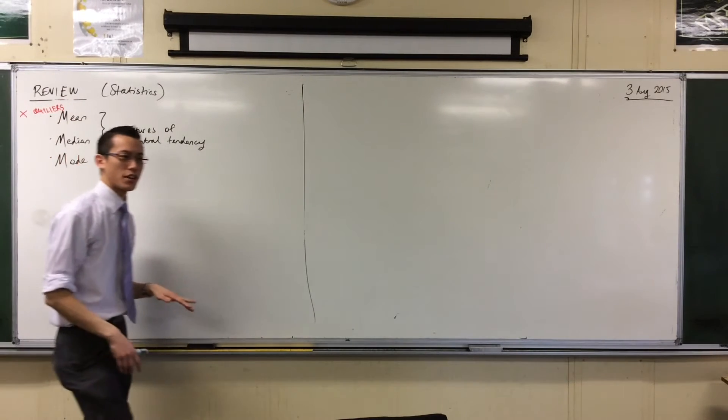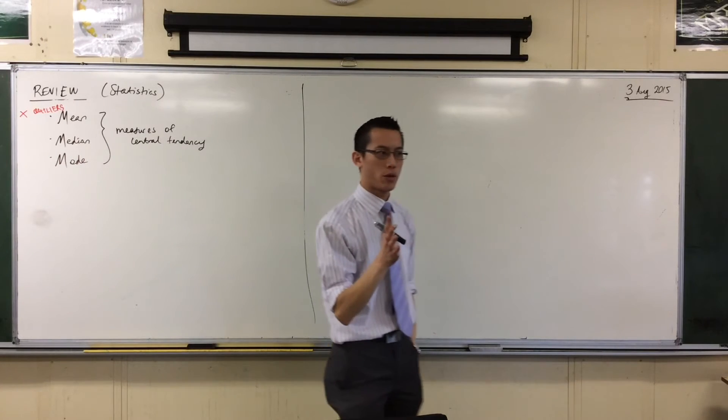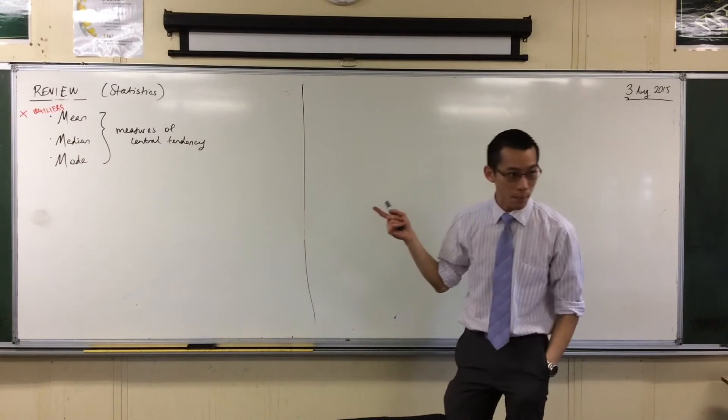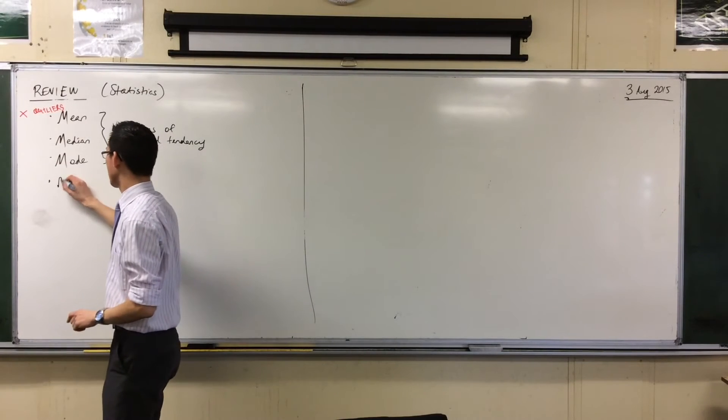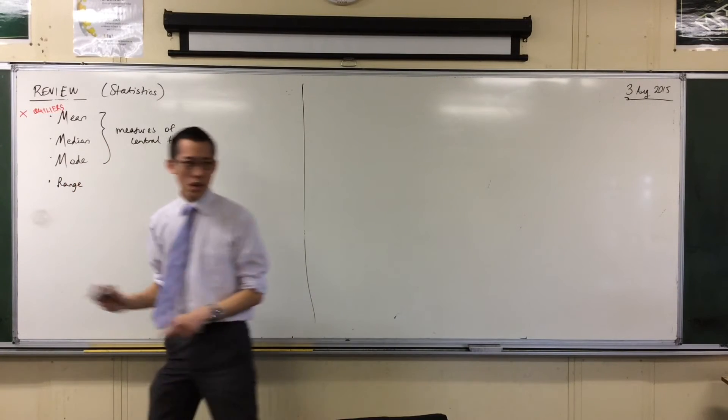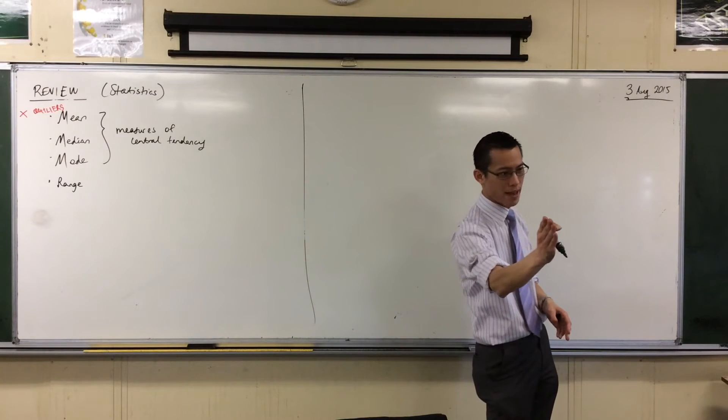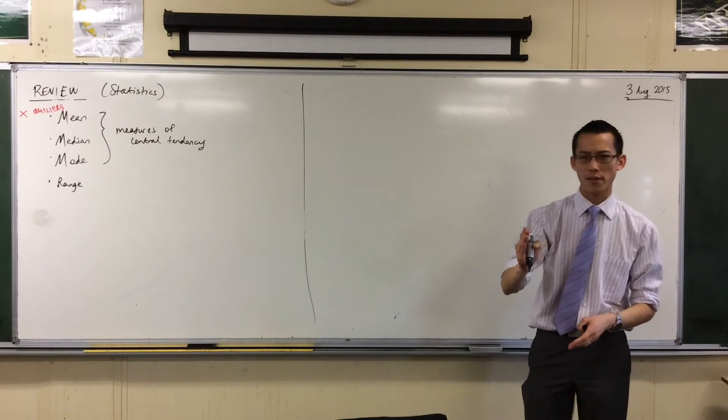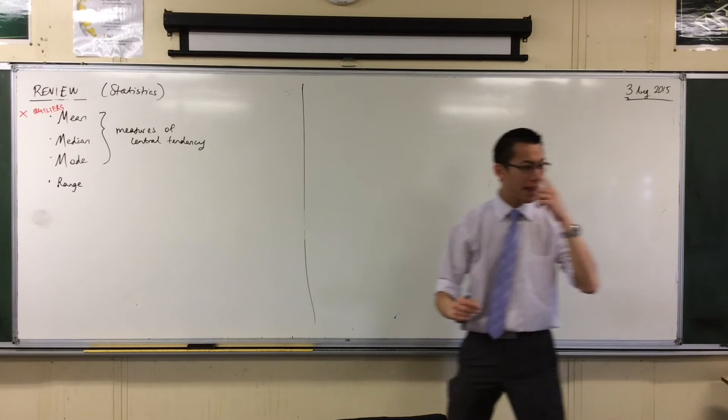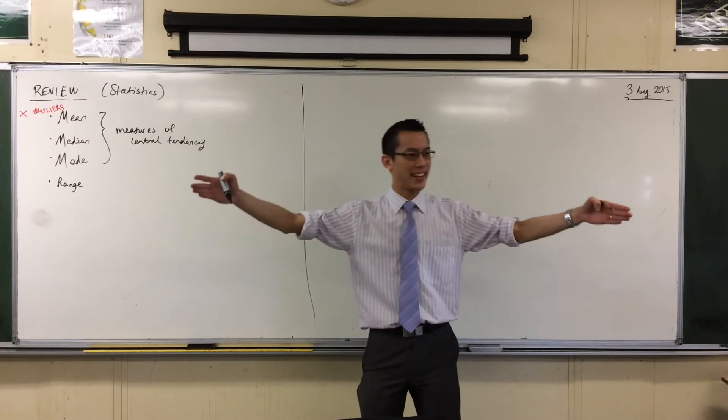So they each have their measure. Now there was one other number that we realised was important. It didn't start with M. RANGE. RANGE, very good. RANGE. So RANGE. Now RANGE is not a measure of the centre of a group, right? What is it a measure of?